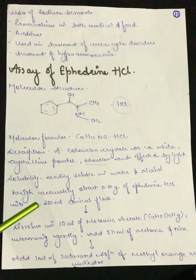What is the procedure? First, we will weigh 0.17 g of ephedrine HCl in a 250 ml conical flask. Then dissolve it in 10 ml of mercuric acetate. We will warm it and add 50 ml of acetone and mix. Then add 1 ml of saturated solution of methyl orange as an indicator. This is our indicator, methyl orange.